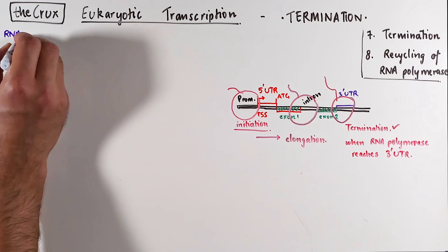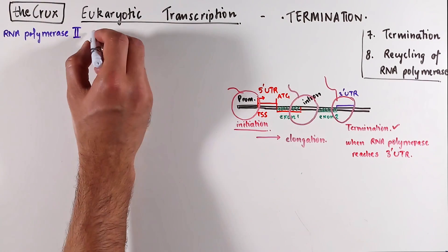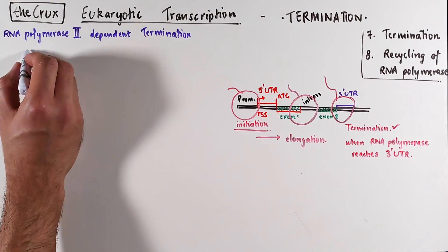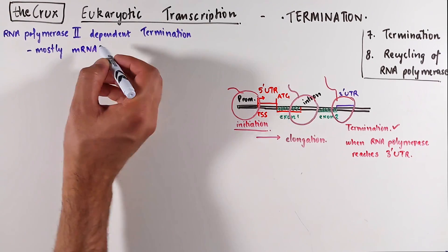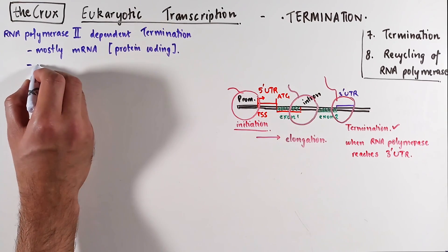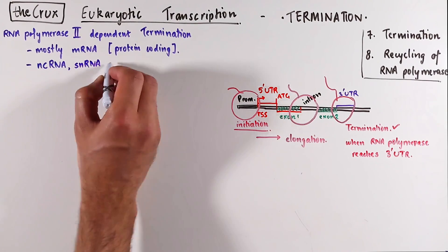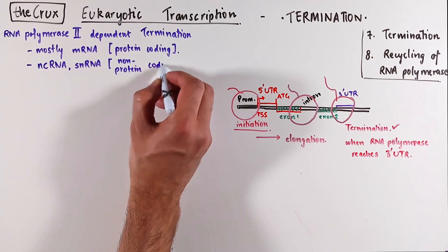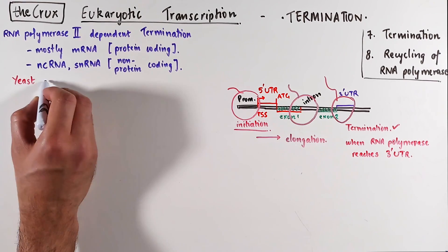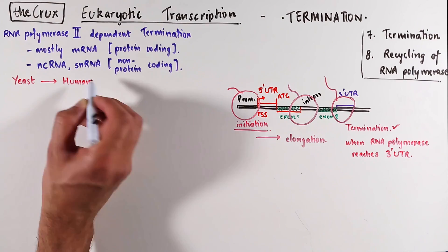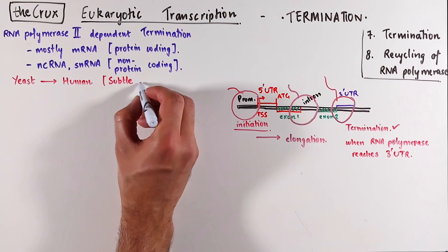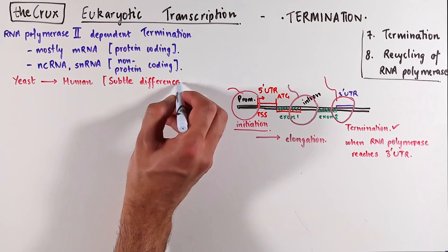In this video, we will only talk about RNA polymerase II, which means we are restricting our discussion to the termination of mRNAs, which are the protein-coding RNAs, and some non-coding RNAs and small nuclear RNAs — the RNAs transcribed by RNA polymerase II in mammalian cells. Eukaryotic transcription termination has historically been studied in yeast as a model system, and then later these studies were translated to humans, though there are some differences that do not translate so well.